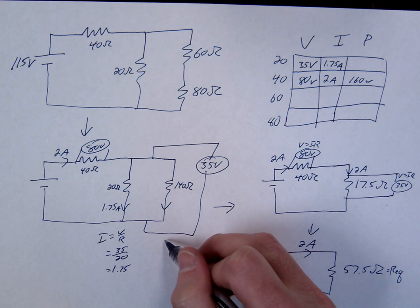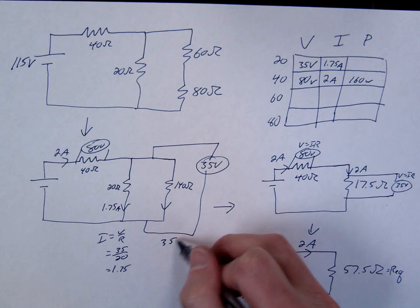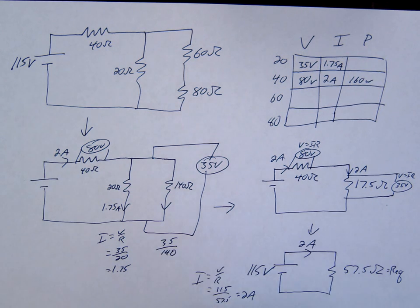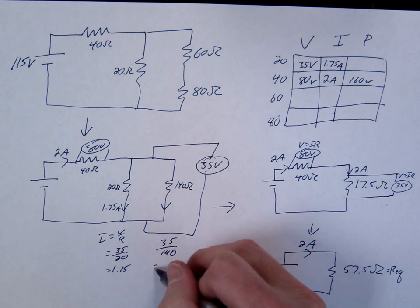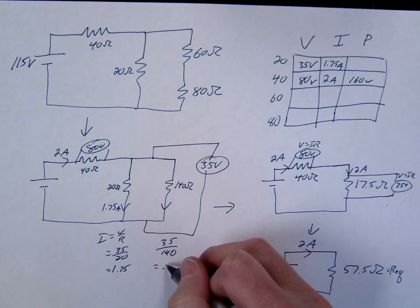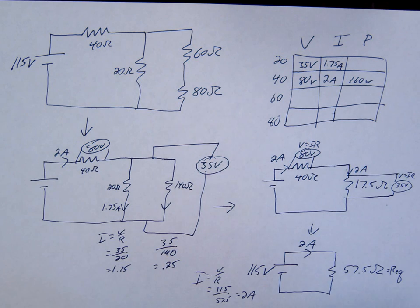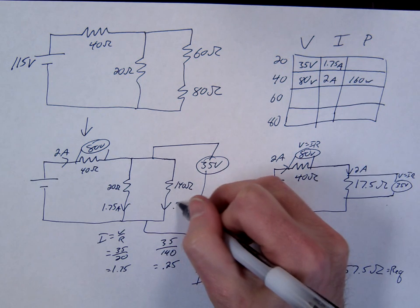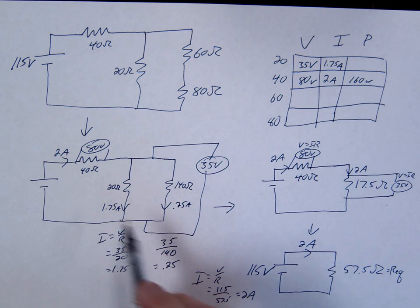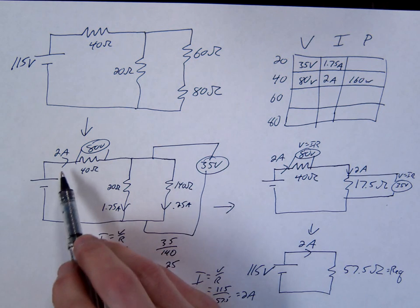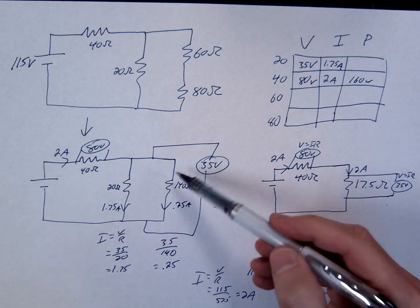Let's do it on the other side. So this time we're going to go 35 over 140, and that is 0.25. So that's going to be 0.25. Always do the mini check: 1.75 plus 0.25 equals 2.